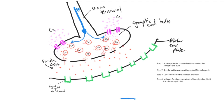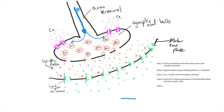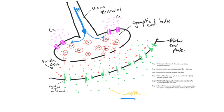Step five: once in the synaptic cleft, acetylcholine binds to the ligand-gated sodium channels, which opens those channels and allows sodium to flood into the muscle tissue. Step six: the influx of sodium into the motor end plate causes a depolarization event, which will continue into the sliding filament theory.